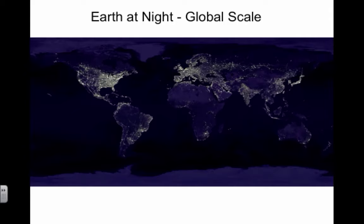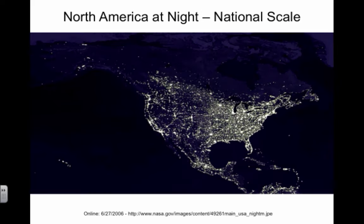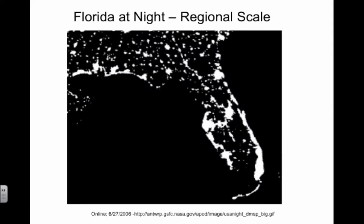To recap on scale: if you look at this map, your instincts might say this is large scale because it's dealing with a lot of area. But in reality, it's small scale because of the fraction. If I go to a national scale—North America at night—this is larger scale. Or if I zoom in even more to Florida at night, this is an even larger scale.